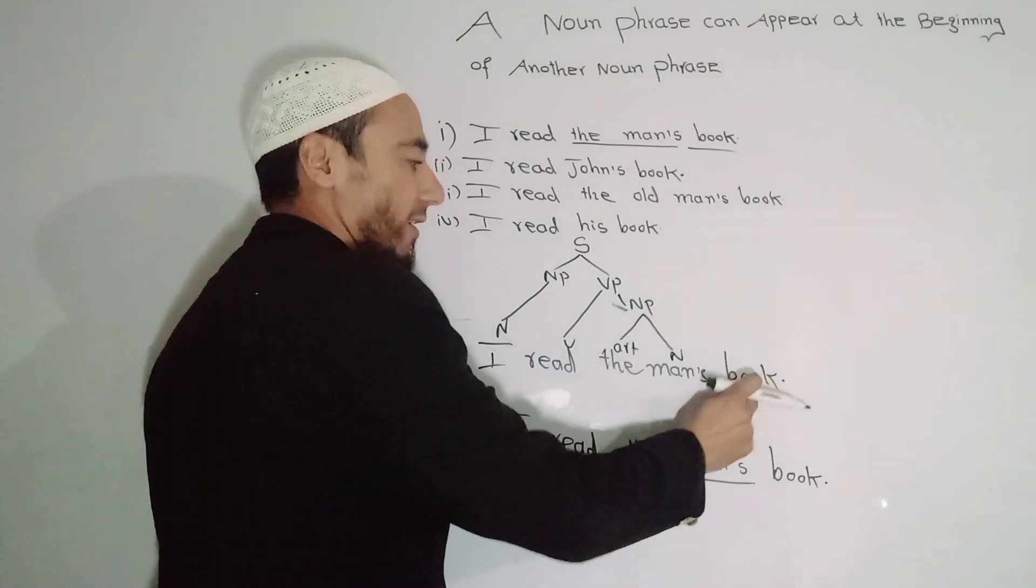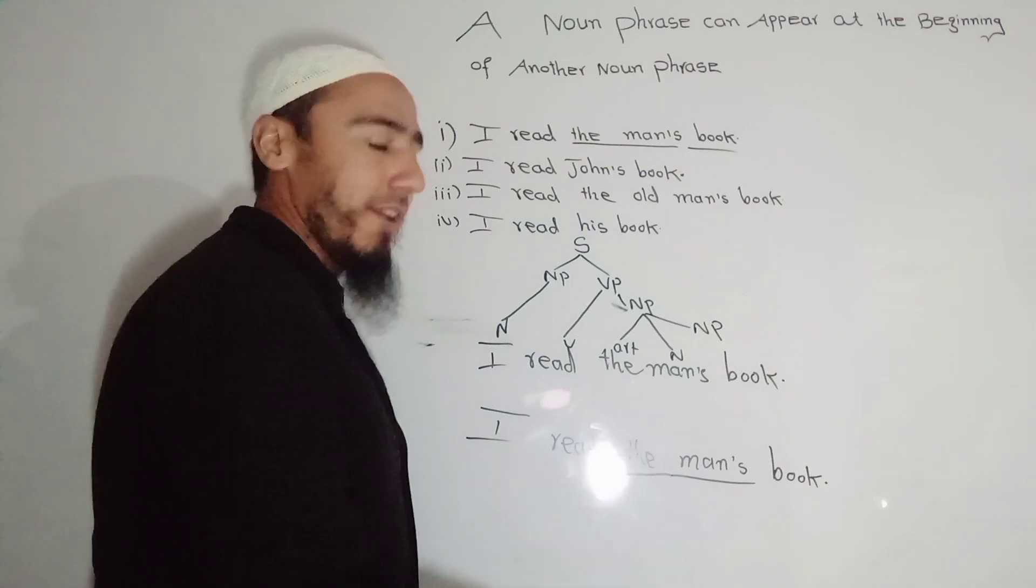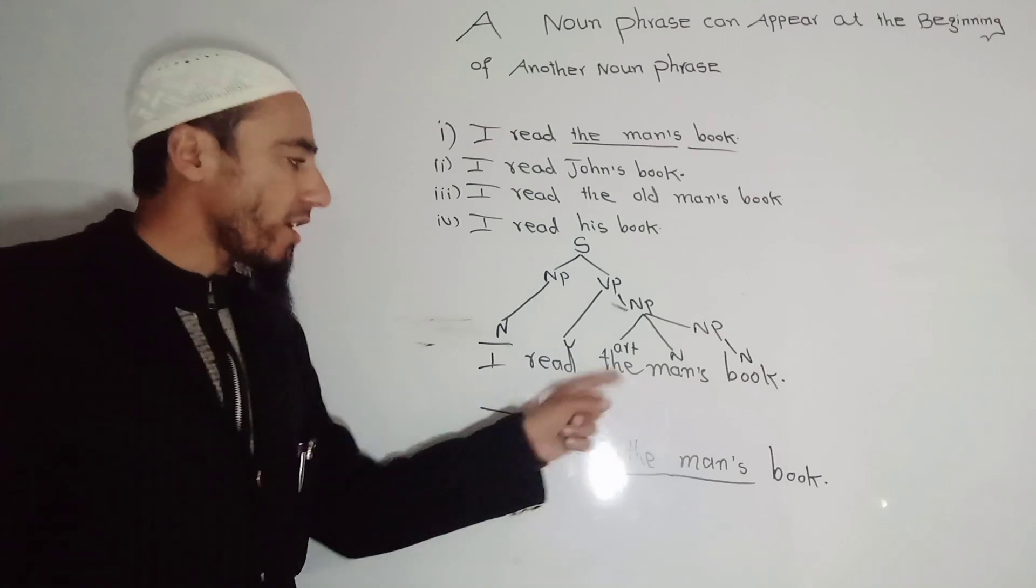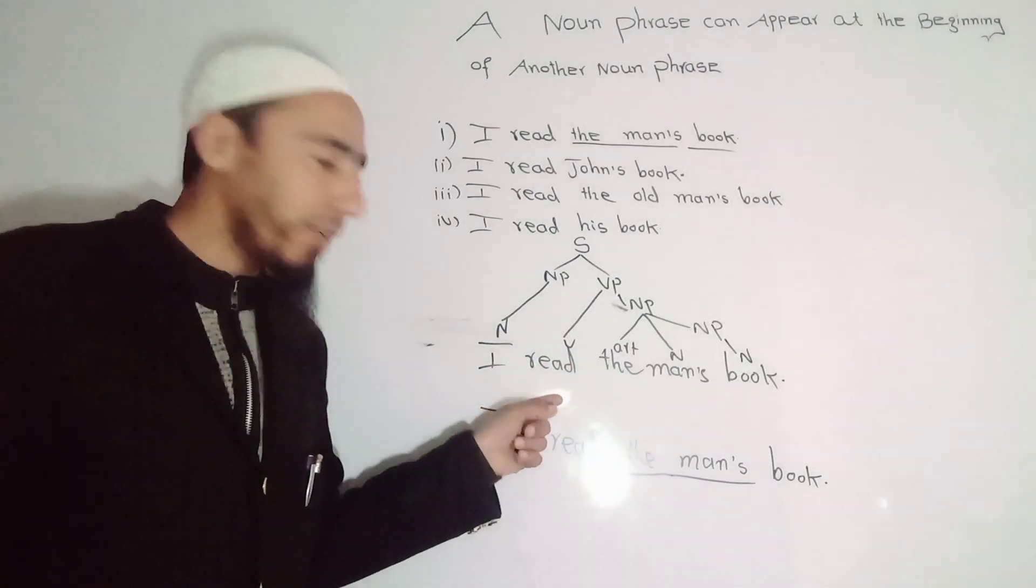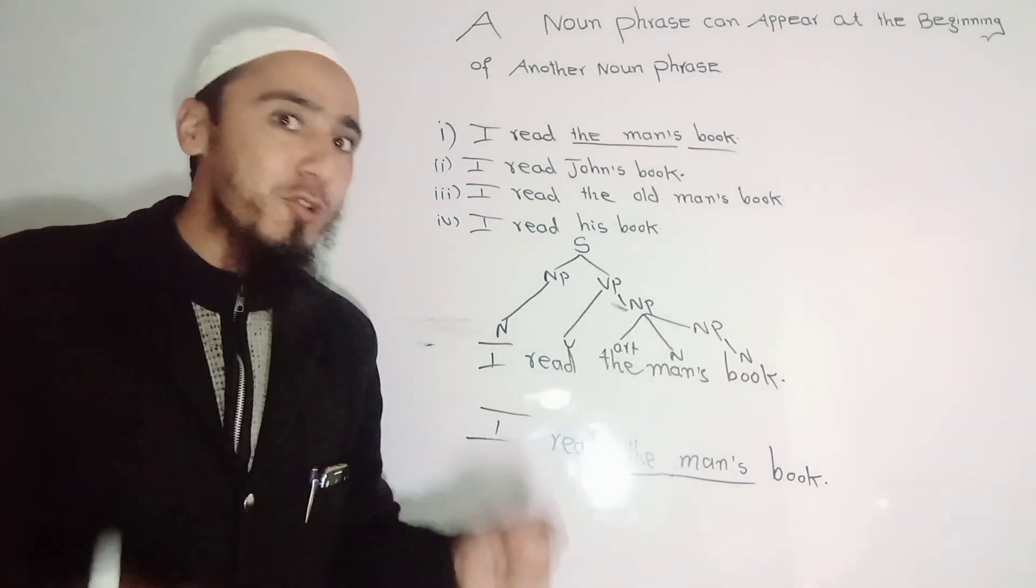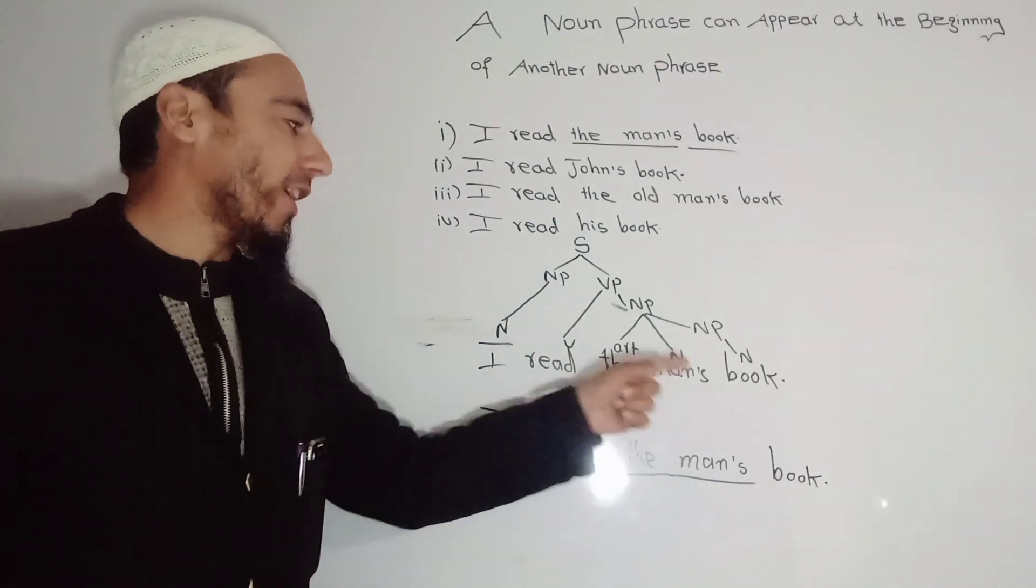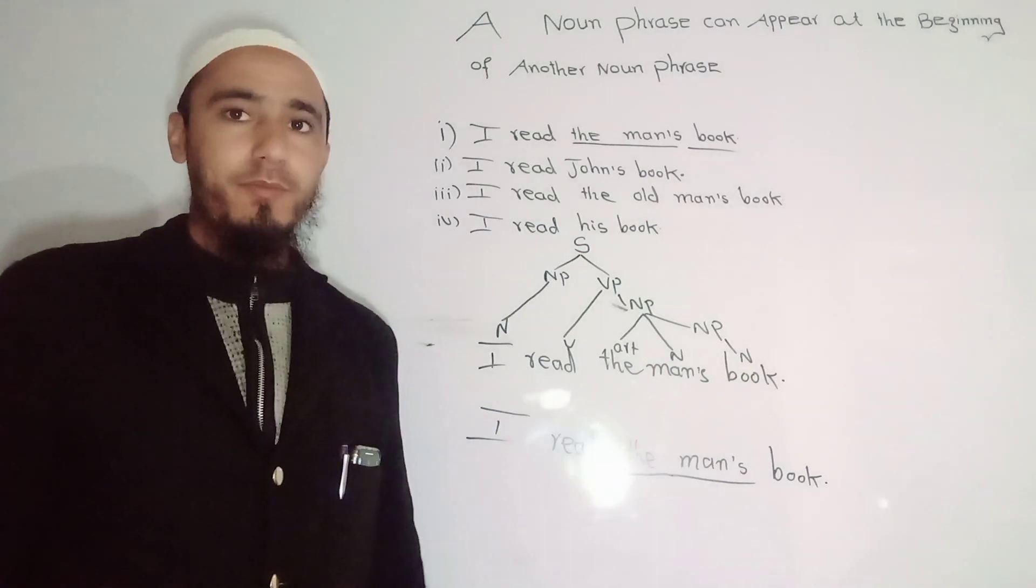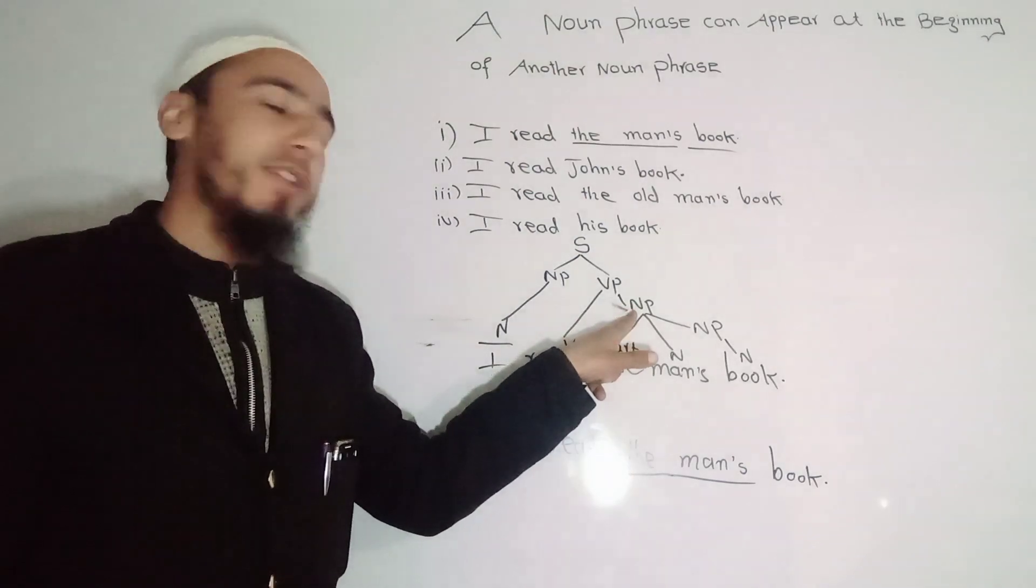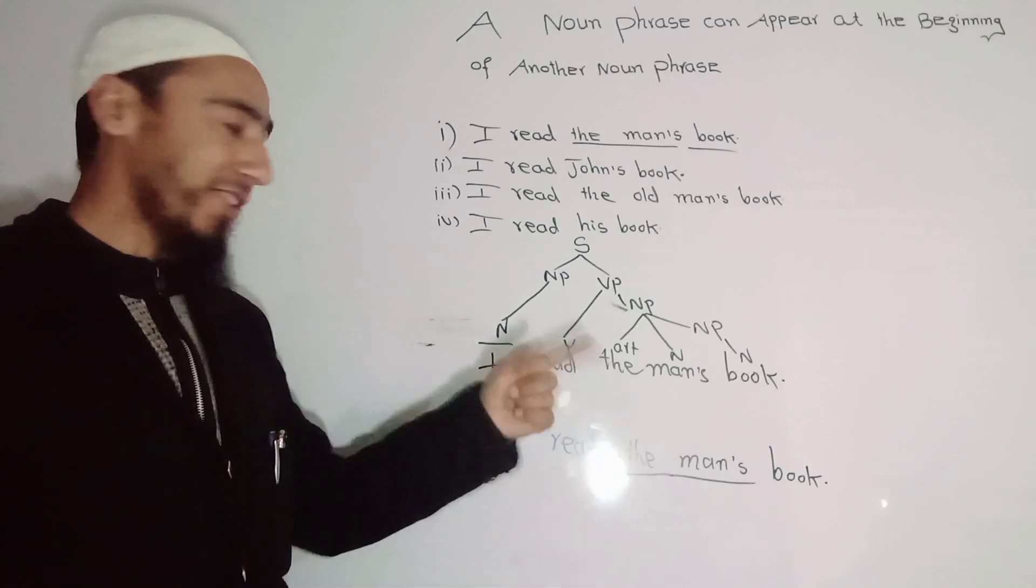Now we are taking another NP because that is 'book.' NP. So one NP dominates another NP. Now see here, 'read' is verb or verb phrase, and 'the man' and 'book' - they are two phrases. And actually, 'read' follows 'the man' and 'book.' So 'read,' which is VP, it dominates NP and it also dominates another NP. I am repeating this structure.